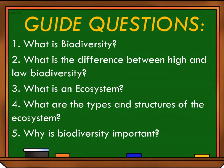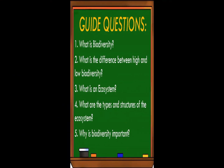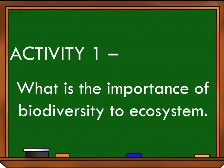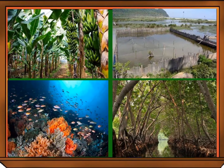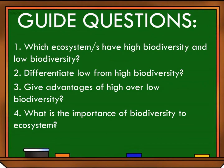Let's have an activity entitled Activity 1: What is the Importance of Biodiversity to Ecosystem? Study the different pictures of different ecosystems and answer the following guide questions: which ecosystem has high biodiversity and which has low biodiversity? Differentiate low from high biodiversity. Give advantages of high over low biodiversity. What is the importance of biodiversity to ecosystems?